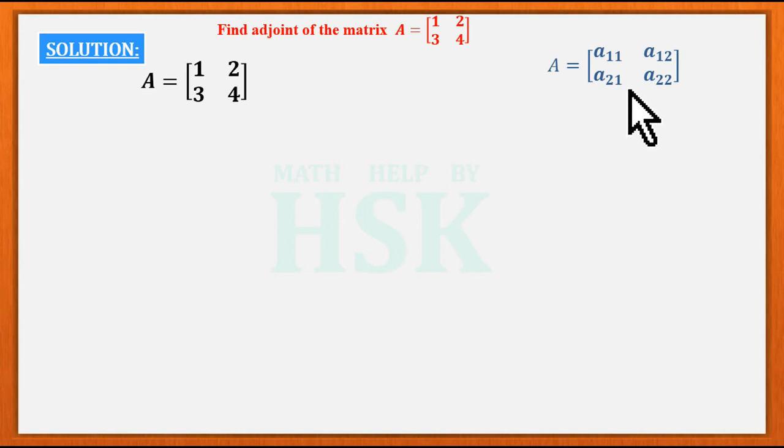We know that if we have a given square matrix like this: a11, a12, a21, a22, then its adjoint is given by [a11, a21; a12, a22]. You have to calculate the cofactors of each element for the given matrix, and you have to write the cofactors of rows in columns to obtain the adjoint of the matrix A.